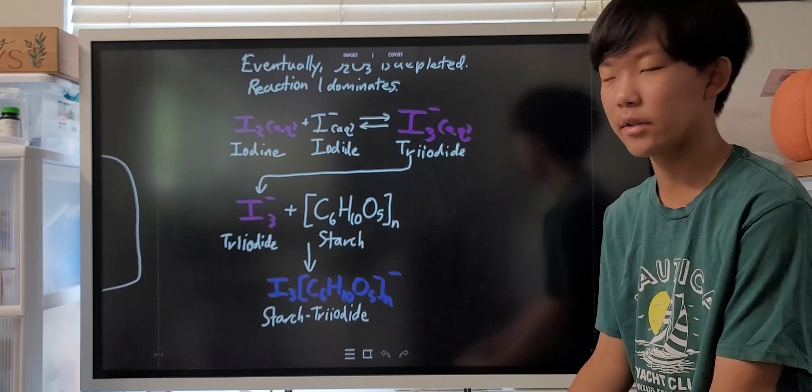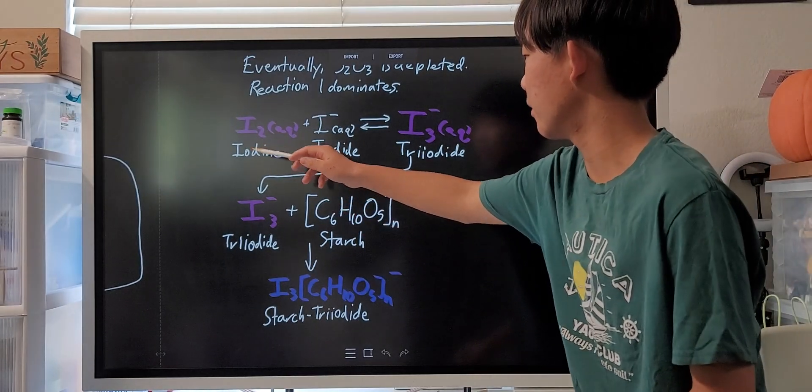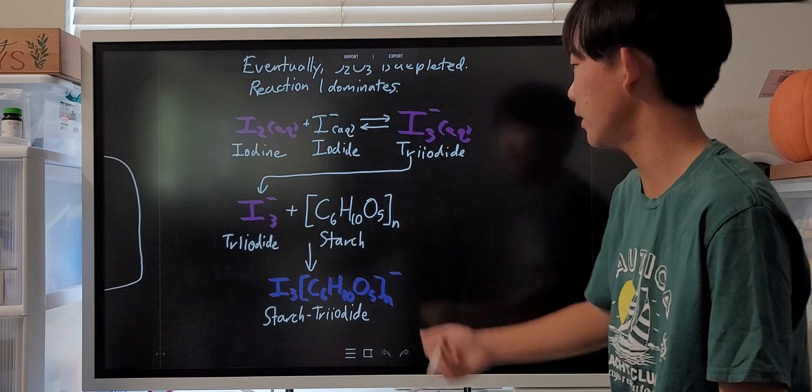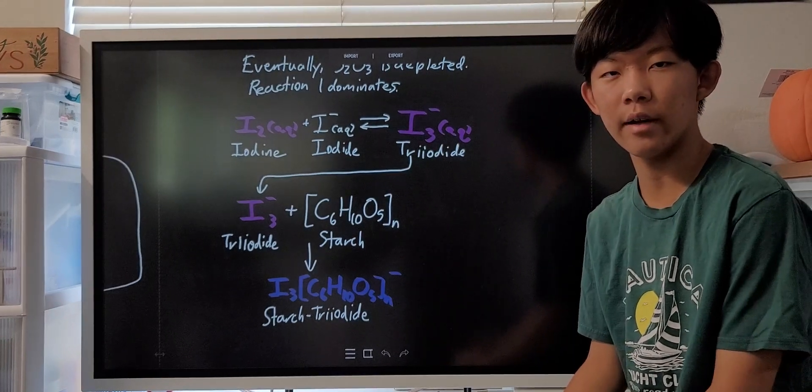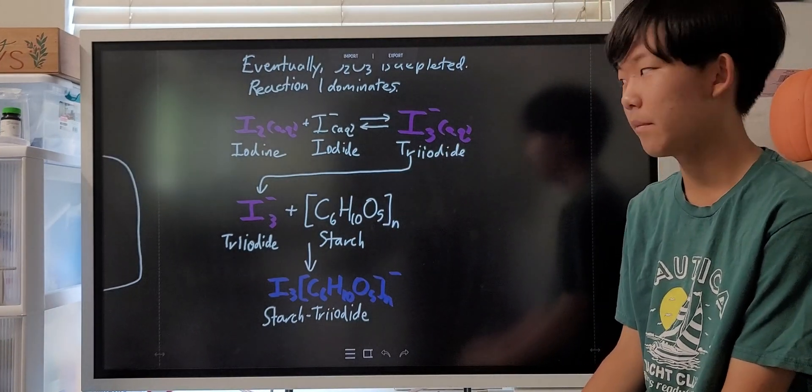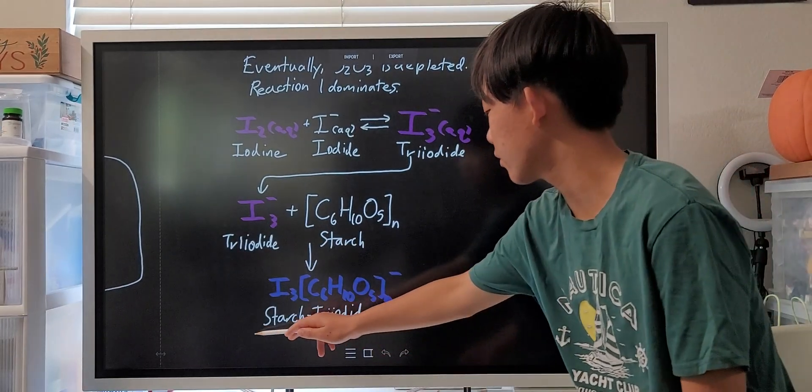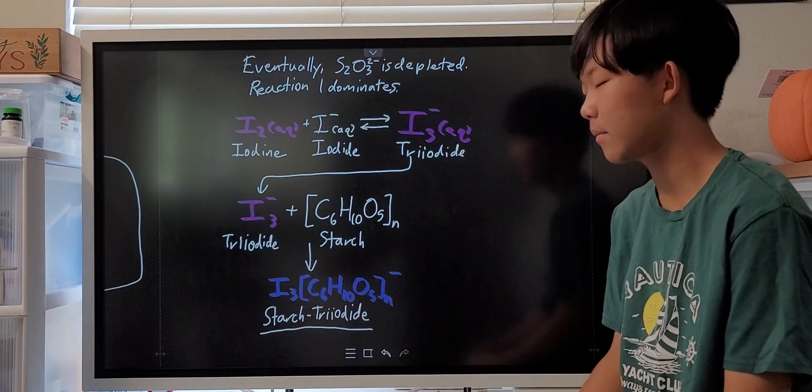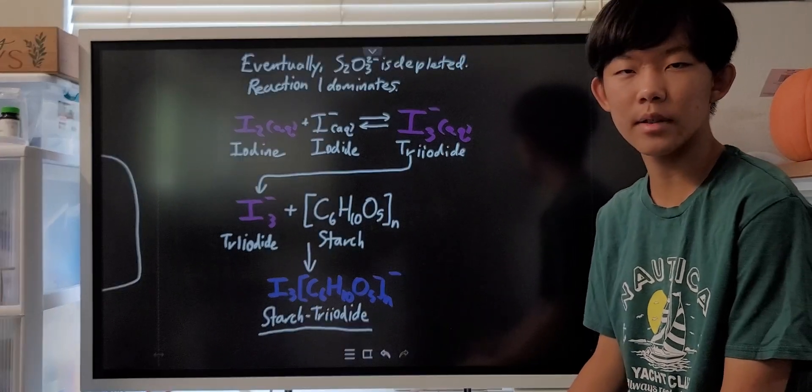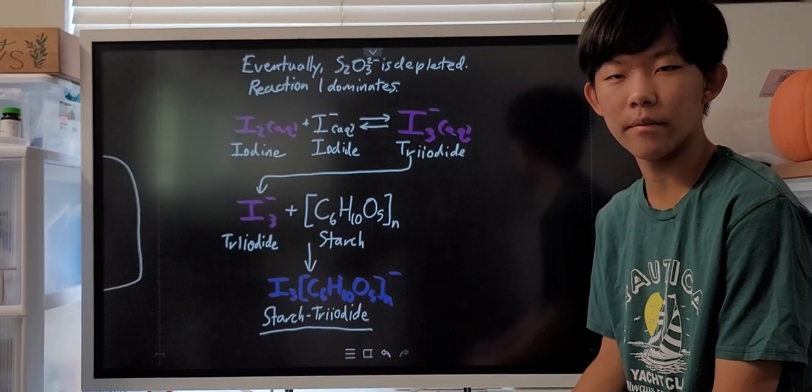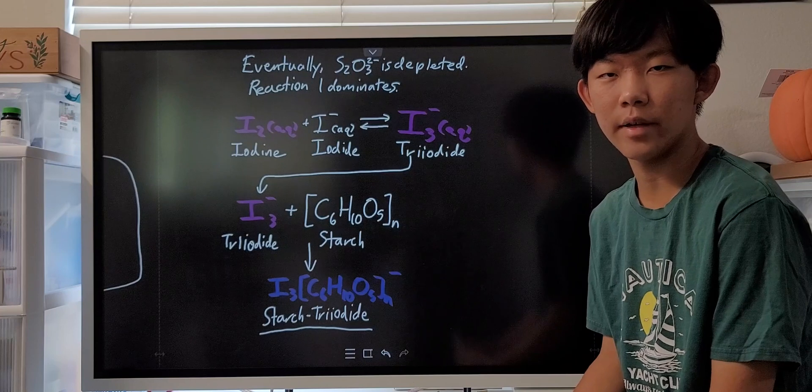If that reaction occurs, then the iodine will complex with excess iodide ions to produce another ion known as triiodide, which will then complex with the starch to produce the blue starch triiodide complex. This complex is a very dark blue color, and that makes it apparent that the reaction has occurred.